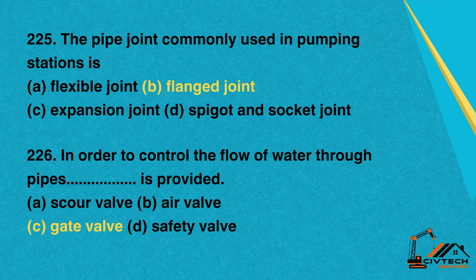Question 225: The pipe joint commonly used in pumping stations is. A. Flexible joint. B. Flange joint. C. Expansion joint. D. Spigot and socket joint. Correct option: B. Flange joint.